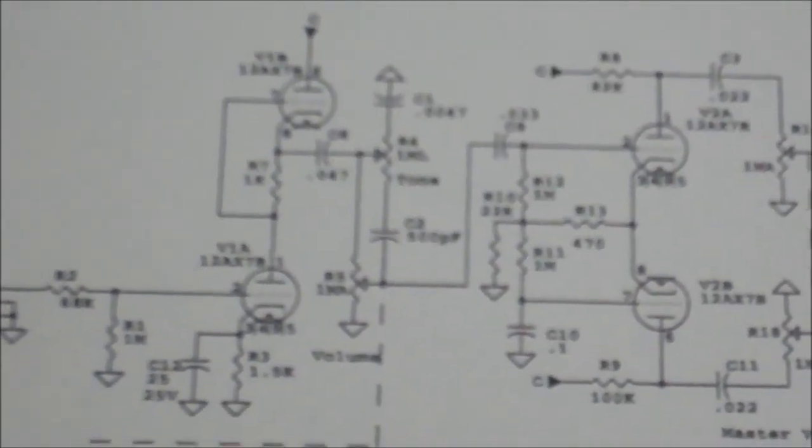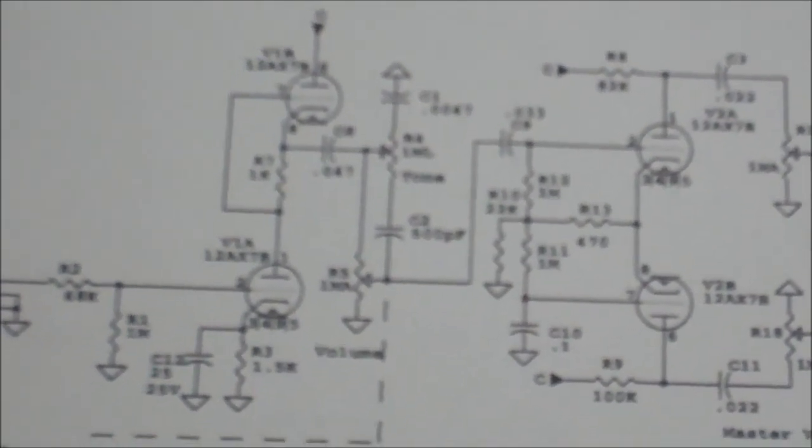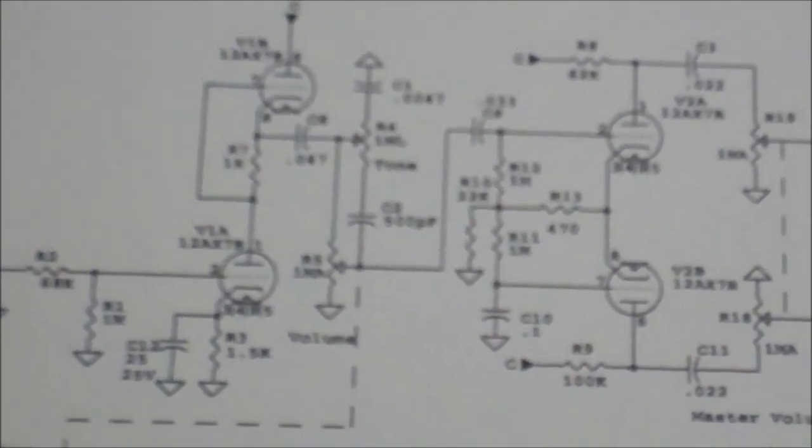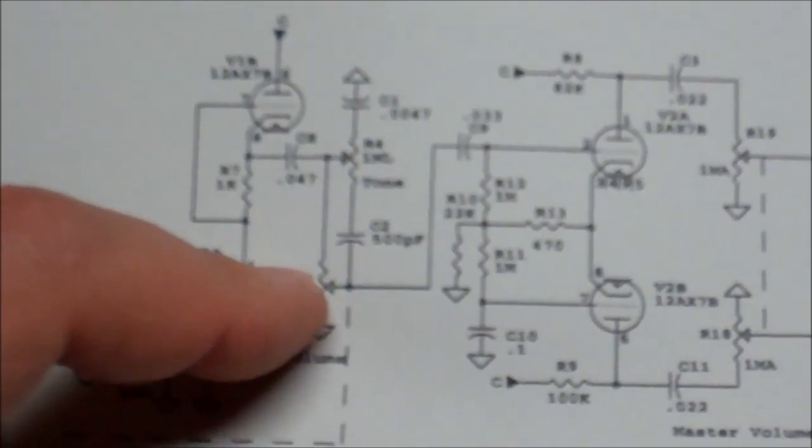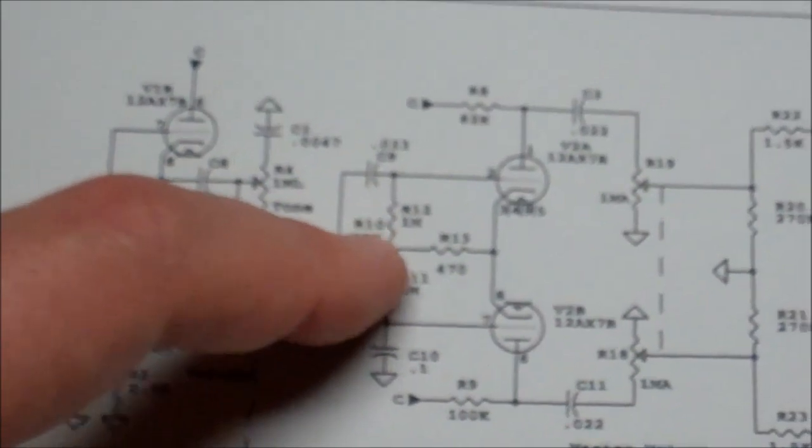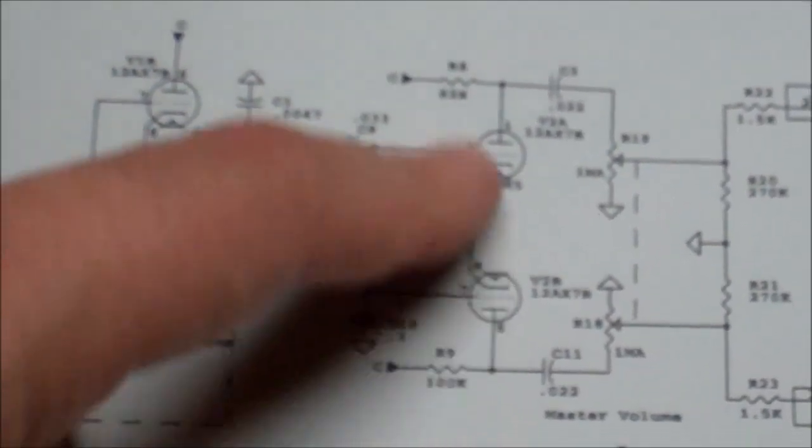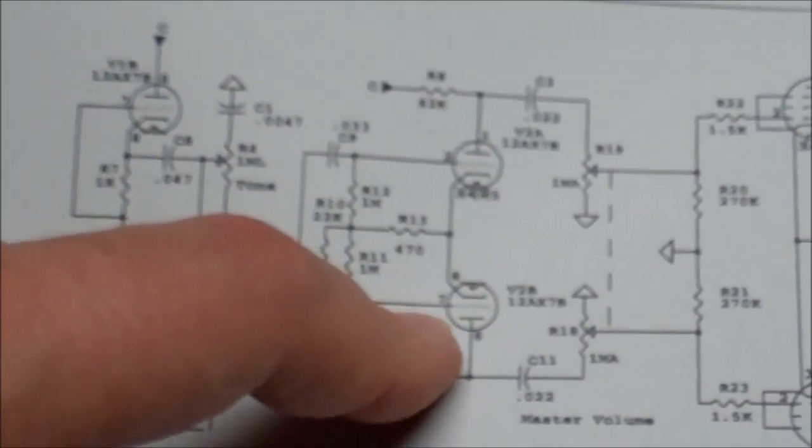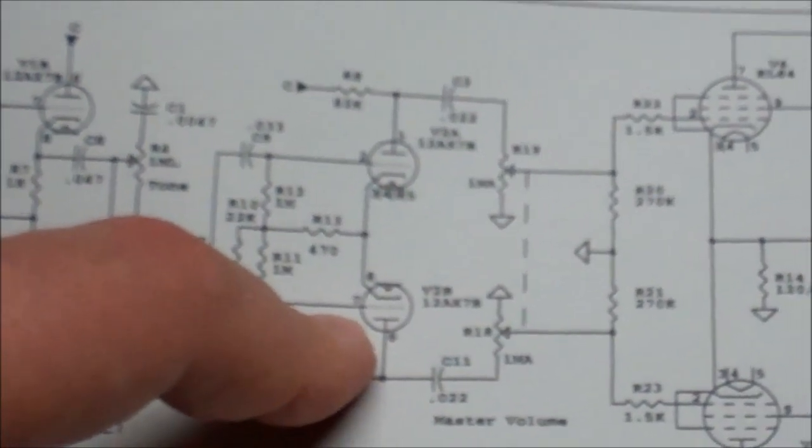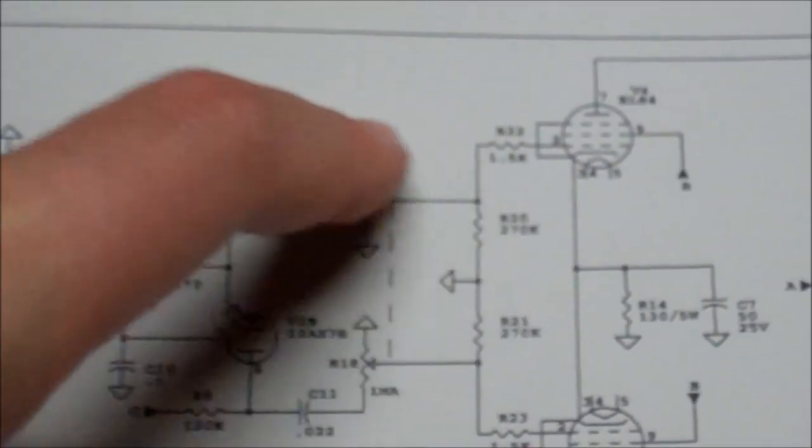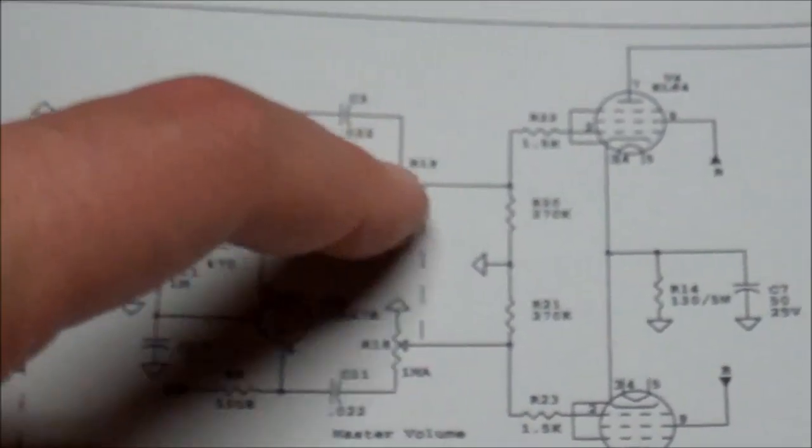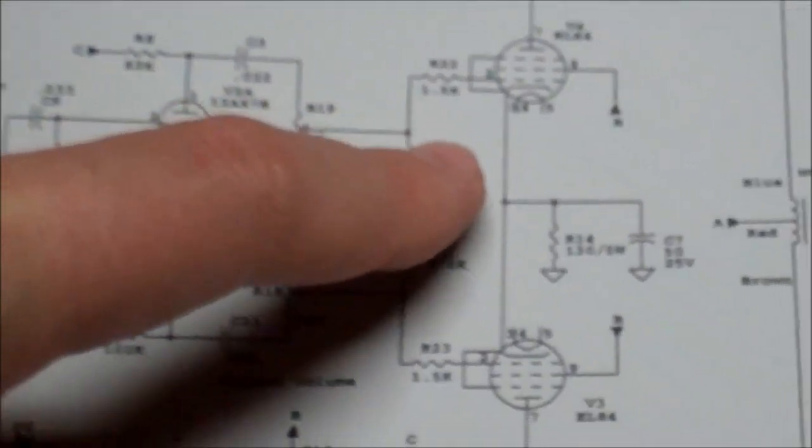And then we have our tone and our first volume or gain volume or whatever, and then that's going to come out to our inverter, which is going to go to the master volume, which is right there, that's the master volume, and then to the power tubes, etc.